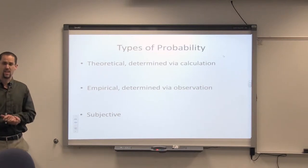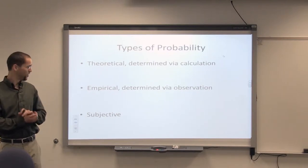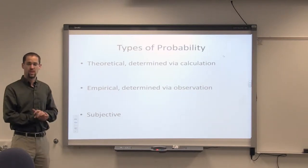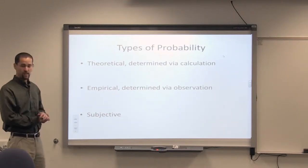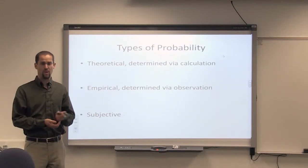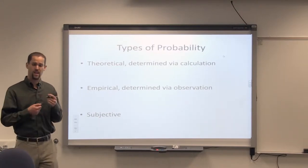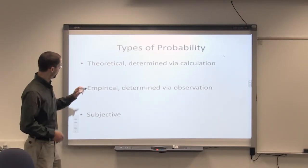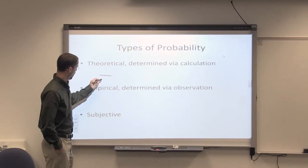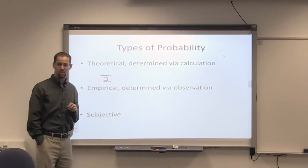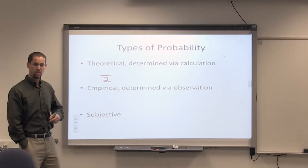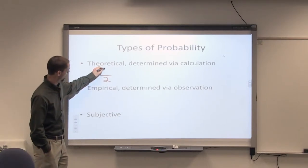Theoretical or calculation kind of probabilities. The simplest example is if you're flipping a coin. Assuming it's a fair coin, you have two options. It could land on heads, it could land on tails. And there are two possible outcomes, heads or tails. And when you flip the coin it's going to come up one of those two.